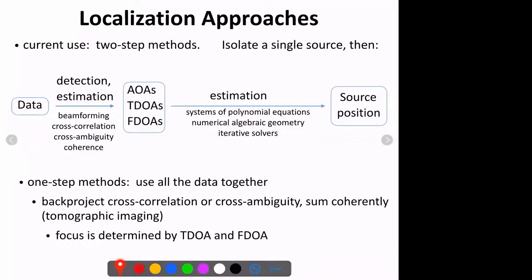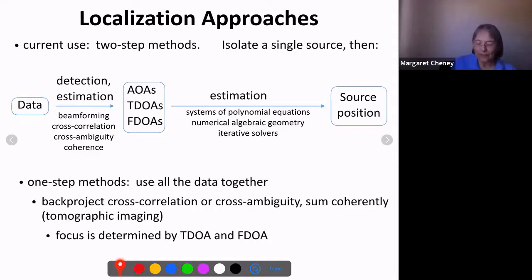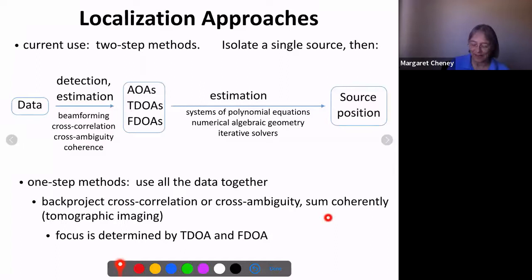Question from audience: What's the relationship to maximum likelihood — given the sensor locations, maximizing the likelihood of the data? Response: That could fit in either approach. You could think of maximum likelihood as a two-step method, or if you solve the maximum likelihood problem by something involving imaging, it might be a one-step method. Certainly using maximum likelihood estimation is a reasonable thing to do.